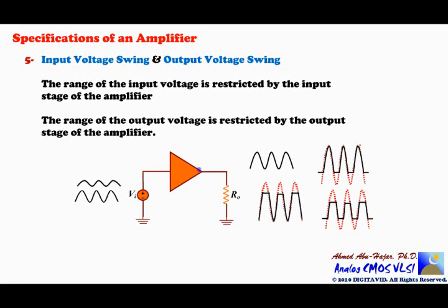Clipping may also occur at the output stage. If the voltage goes too high, the transistor at the output stage shuts off and the output clips at the top. If the output voltage drops too low, the transistor at the output shuts off and the output clips at the bottom. In summary, both the input stage and output stage have restricted voltage ranges — the voltage cannot swing above or below a bounded range at either the input or output, otherwise clipping will occur.